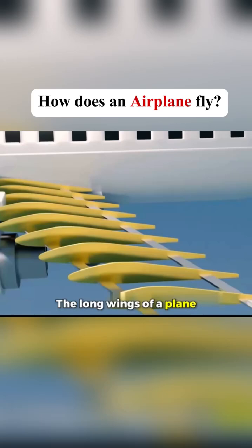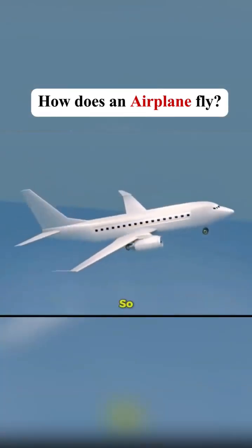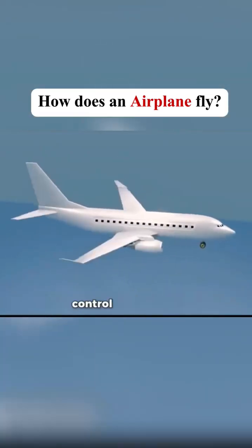The long wings of a plane use this design effectively. So how does the plane precisely control its position?